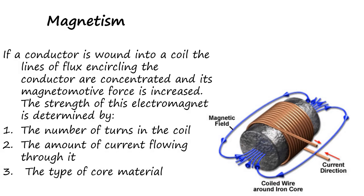If a conductor is wound into a coil, the lines of flux encircling the conductor are concentrated and its magnetomotive force is increased. The strength of this electromagnet is determined by: 1. the number of turns in the coil, 2. the amount of current flowing through it, and 3. the type of core material.